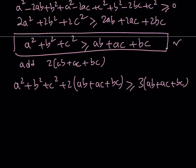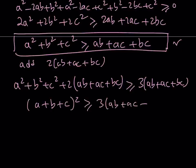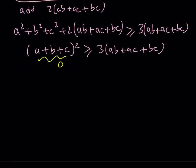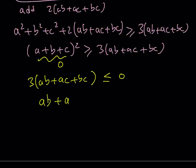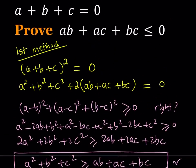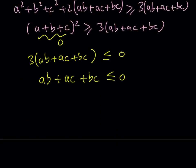Notice that the left-hand side becomes the quantity a plus b plus c squared, giving us another inequality. Now we do know that a plus b plus c is equal to zero. So we get the result that three times ab plus ac plus bc is less than or equal to zero. Dividing both sides by three gives the conclusion: ab plus ac plus bc is less than or equal to zero, which is what we were trying to prove. That ends the first method.